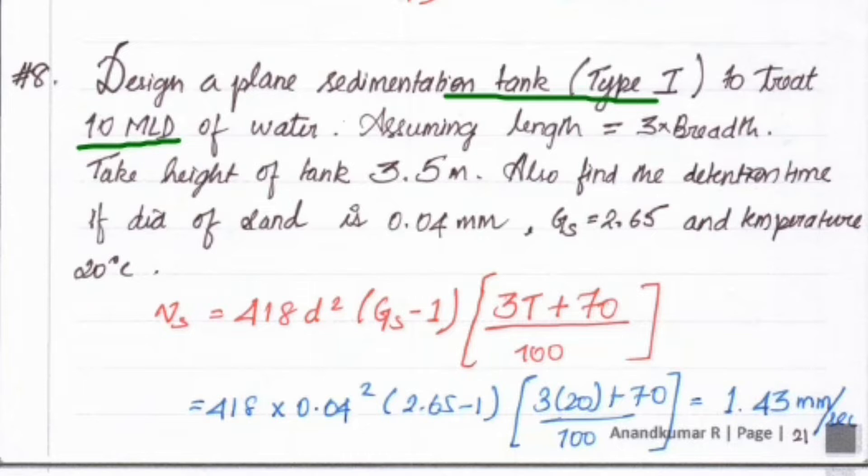Assuming the length equals 3 times breadth, take the height of the tank as 3.5 meters. Also find the retention time if the diameter of the sand is 0.04 mm, specific gravity equals 2.65, and the temperature is 20 degrees Celsius.